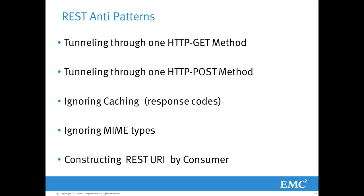There are also a few anti-patterns to highlight. Making all requests through one HTTP GET method is totally unacceptable — it's an anti-pattern because it increases too much complexity in maintenance. Similarly, routing everything through one HTTP POST method is another anti-pattern. Ignoring caching is also problematic because one of REST's fundamental principles is that the client should be able to cache responses and use cached data when the server indicates it. If you are writing a consumer for a RESTful service and not analyzing the response codes, you are not truly following REST principles, which leads to an anti-pattern. Ignoring MIME types and content type are also examples of REST anti-patterns.